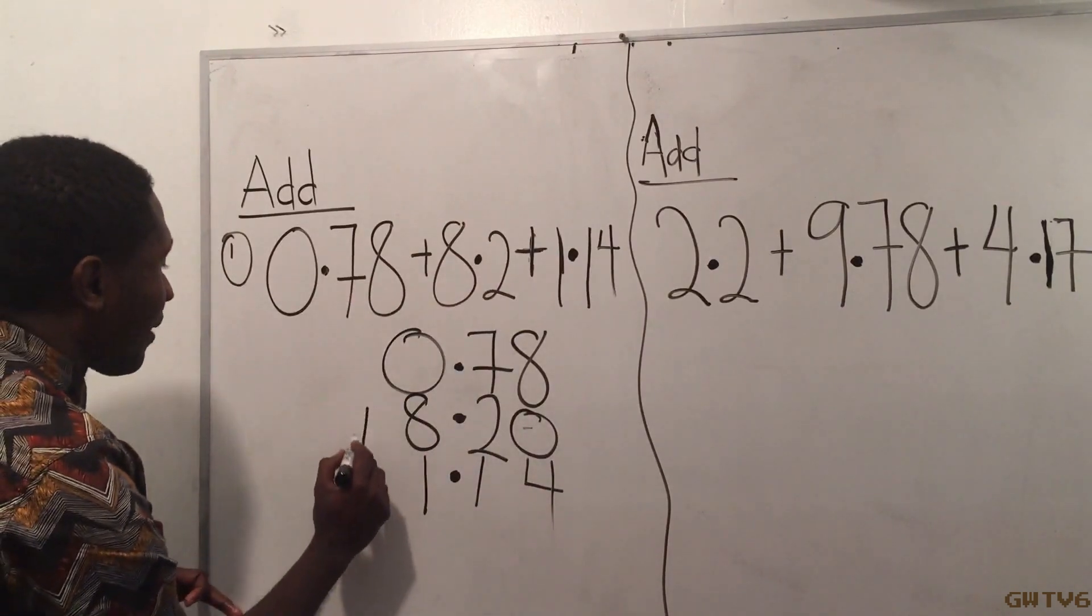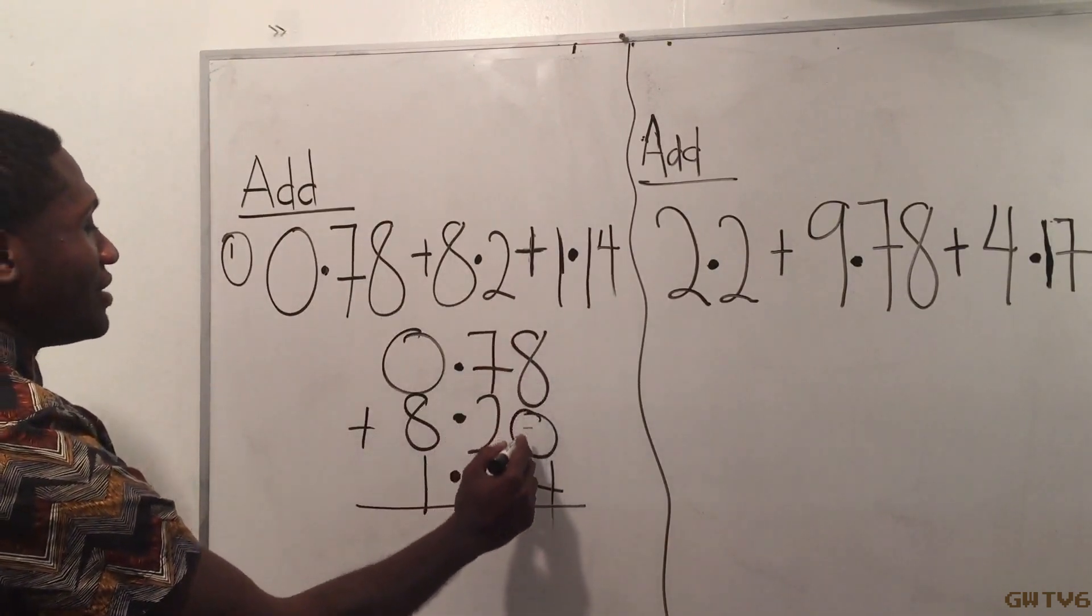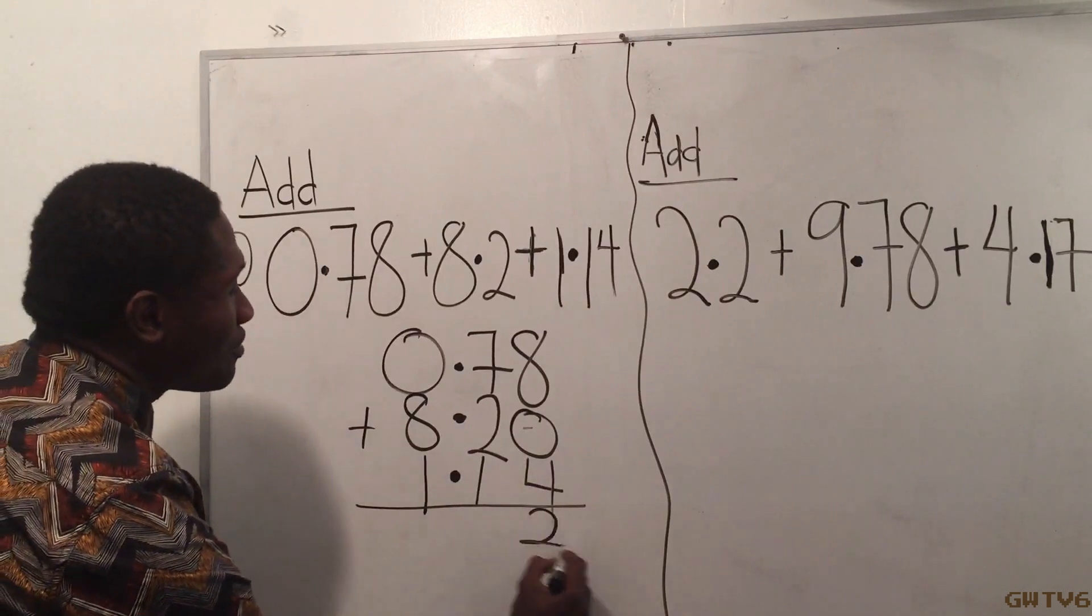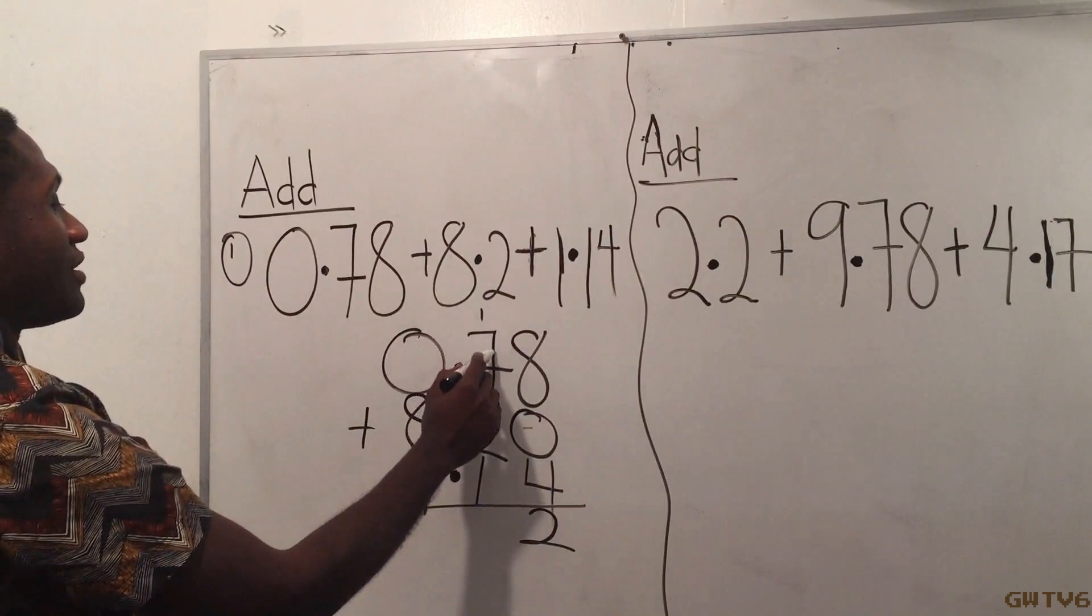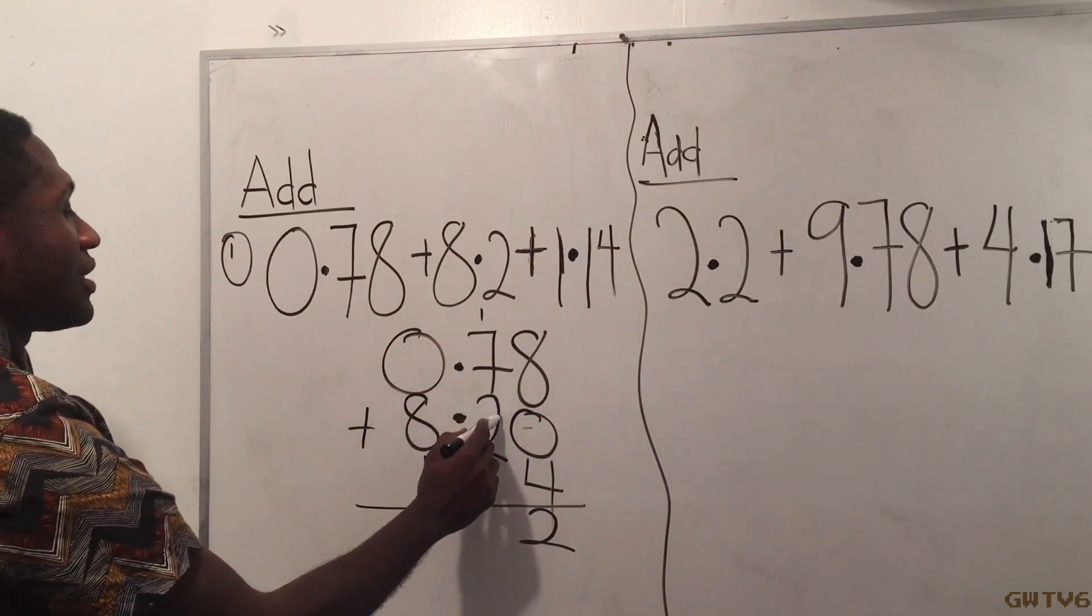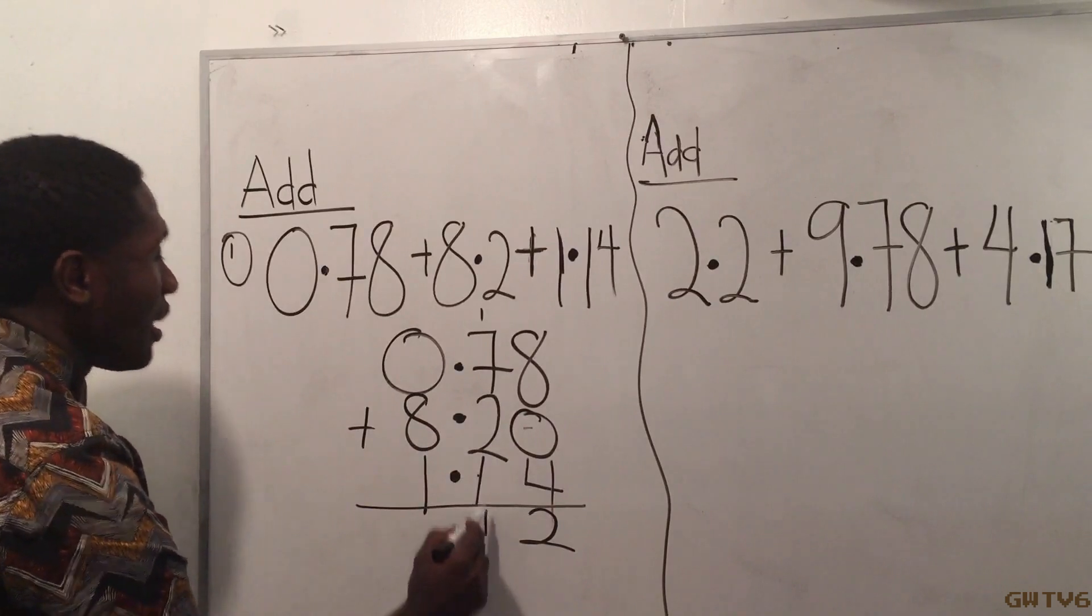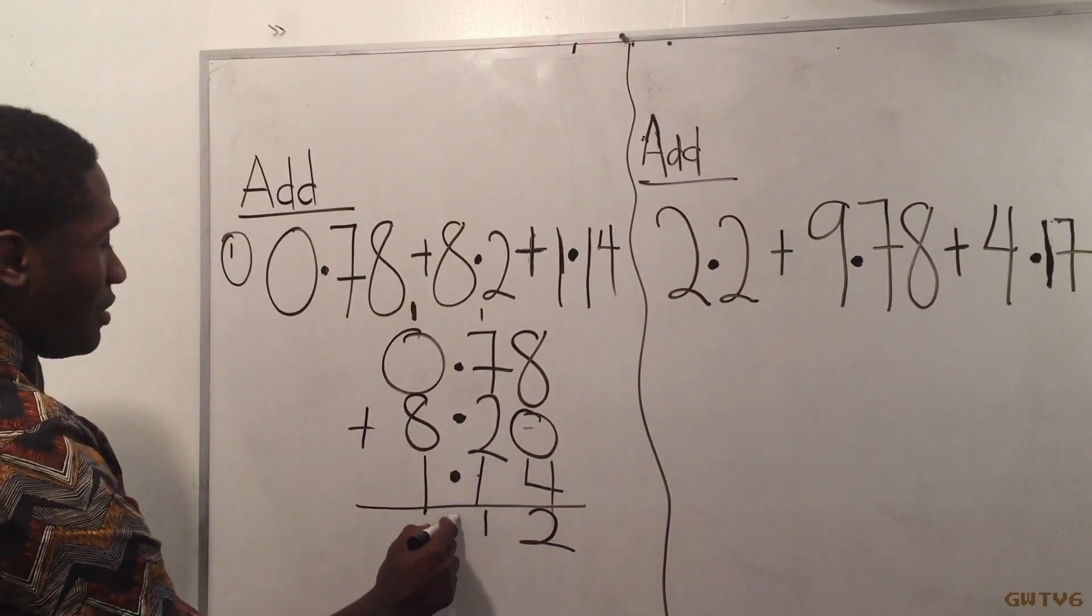I add 8 plus 0 plus 4 is 12. I put 2 and then I carry my 1. So 1 plus 7 is 8, plus 2 is 10, plus 1 is 11. I put my 1, I carry my 1 right there. Let me just put my decimal point so I don't forget.